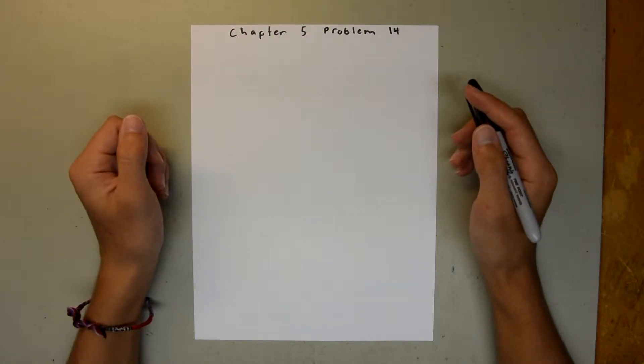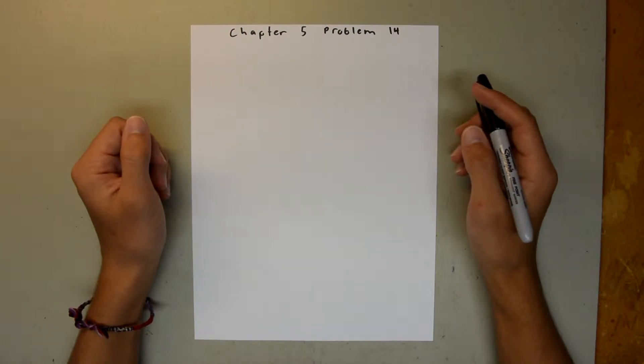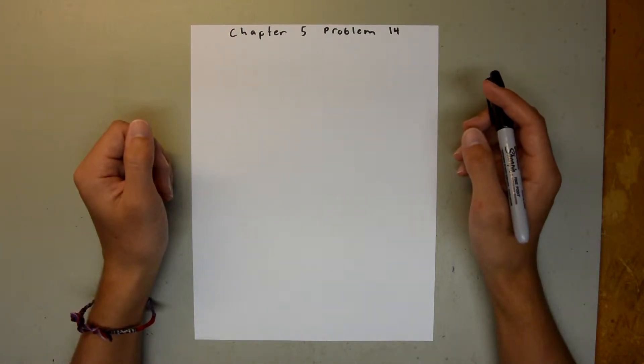Chapter 5 is all about force and motion, Part 1. In Problem 14, we have a block on a table that has an upward force by a string, and we are asked to find the magnitude and direction of the force of the block on the table.